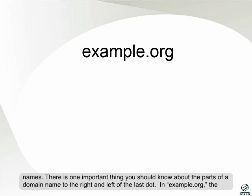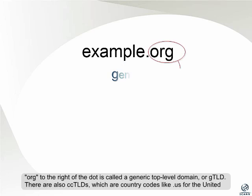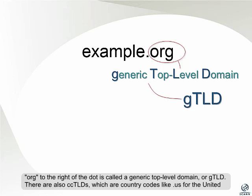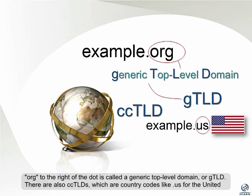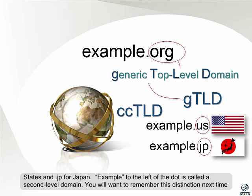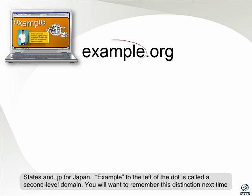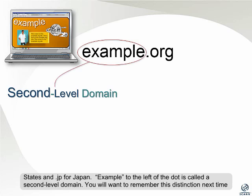There's one important thing you should know about the parts of a domain name to the right and left of the last dot. In example.org, the ".org" to the right of the dot is called a generic top-level domain, or GTLD. There are also CCTLDs, which are country codes like .US for United States and .JP for Japan. "Example" to the left of the dot is called a second-level domain.